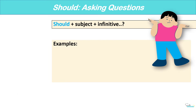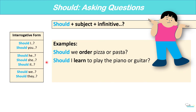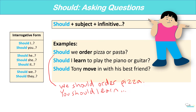We can also use should to ask questions when we are asking for advice: Should I? Should you? Should he? Should she? Let's look at some examples: Should we order pizza or pasta? Should I learn to play the piano or guitar? Should Tony move in with his best friend? Now how would we answer these? We should order pizza. You should learn to play the piano. Yes, he should — or no, he shouldn't.